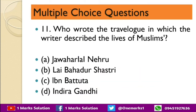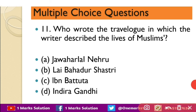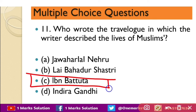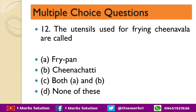Next question: who wrote the travelogue in which the writer described the lives of Muslims? The options are Jawaharlal Nehru, Lal Bahadur Shastri, Ibn Battuta, or Indira Gandhi. The correct option is C — Ibn Battuta. Next question: the utensils used for frying fish in Kerala are called — the options are fry pan, China Chatti, both A and B, or none of these.